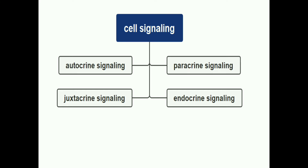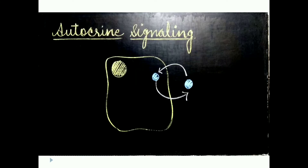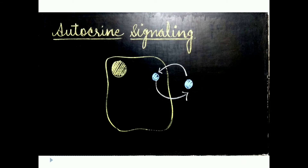First, let's talk about autocrine signaling. 'Auto' means self. So in autocrine signaling, the signals are produced by the signaling cell itself, and that same cell also acts as the target cell — it responds to the signals it has produced.